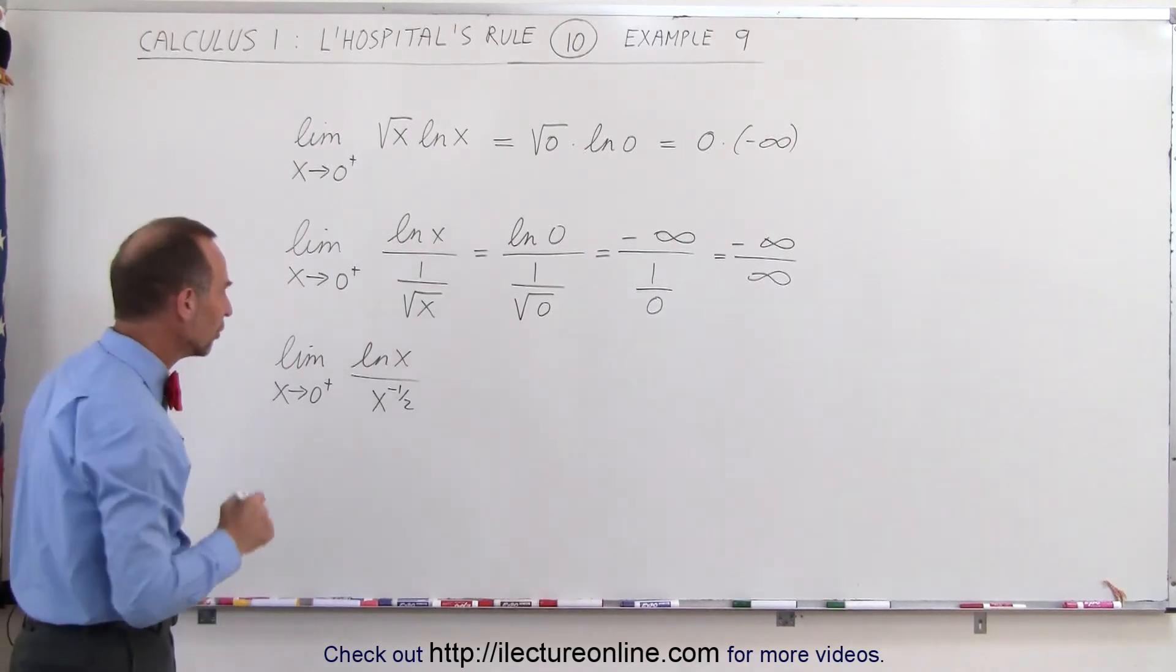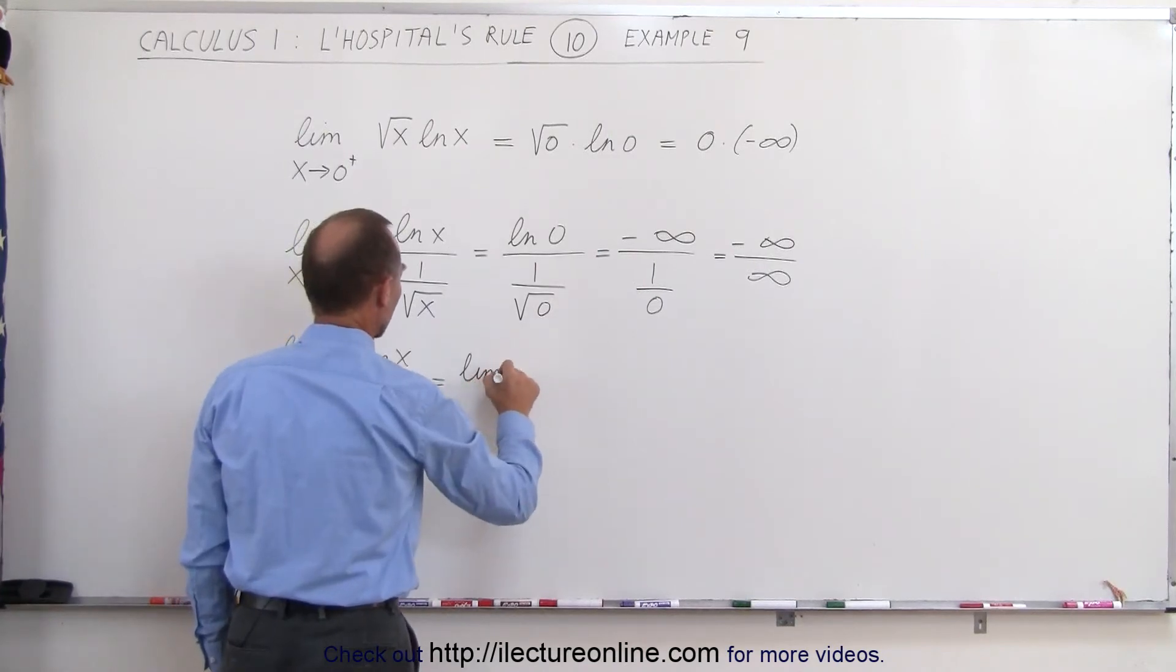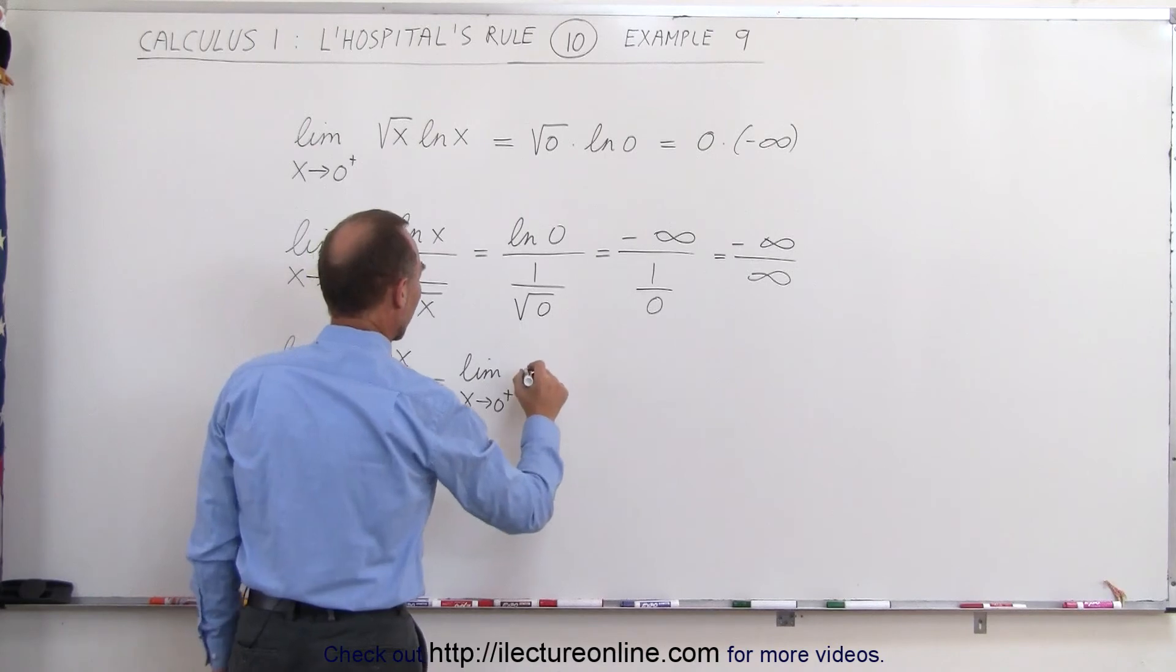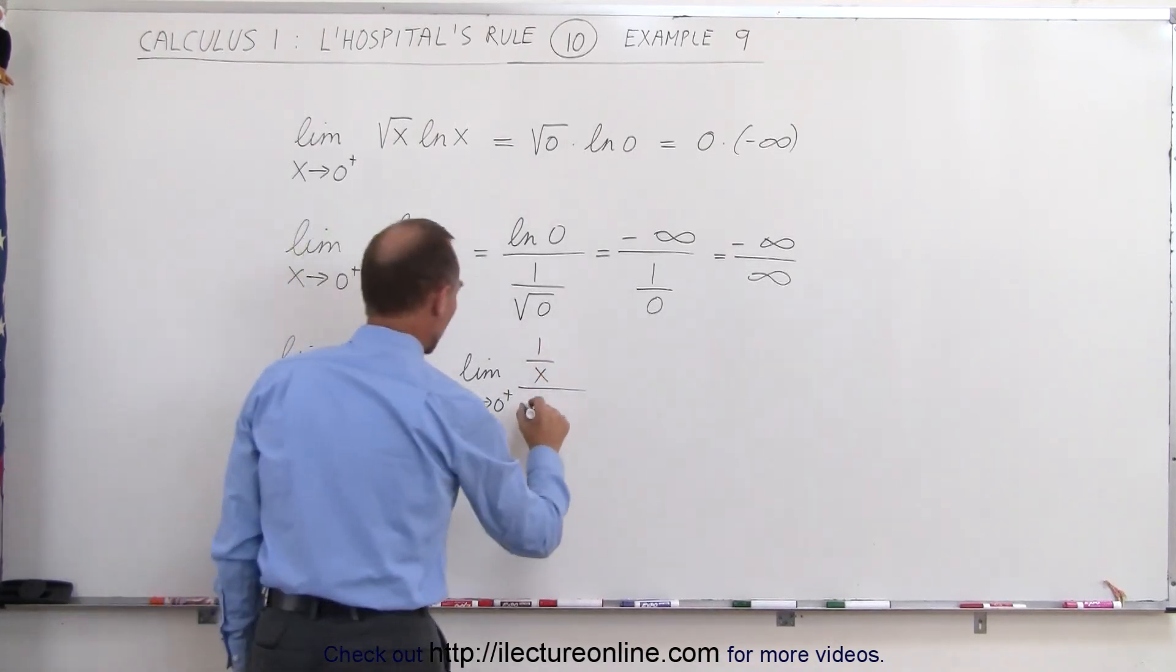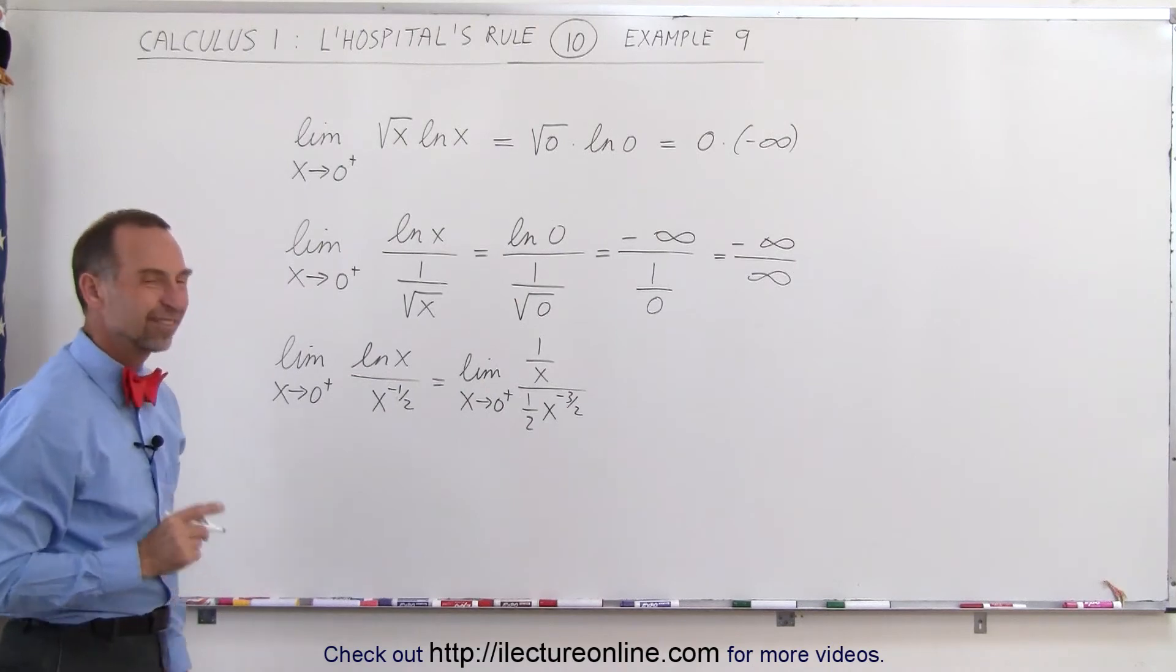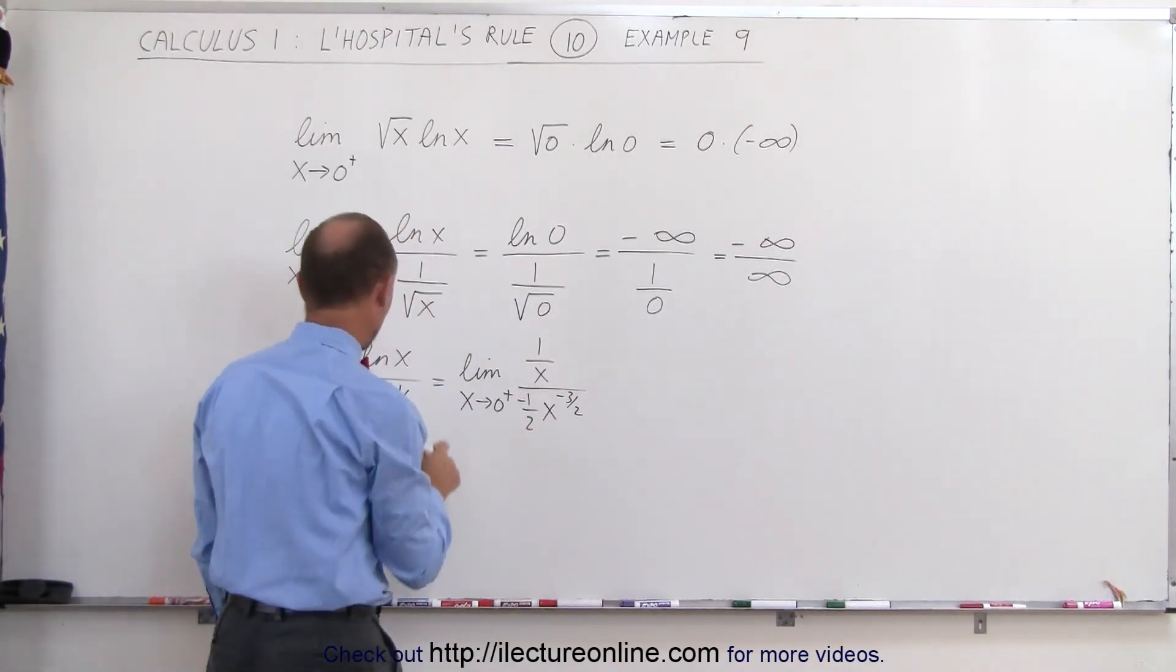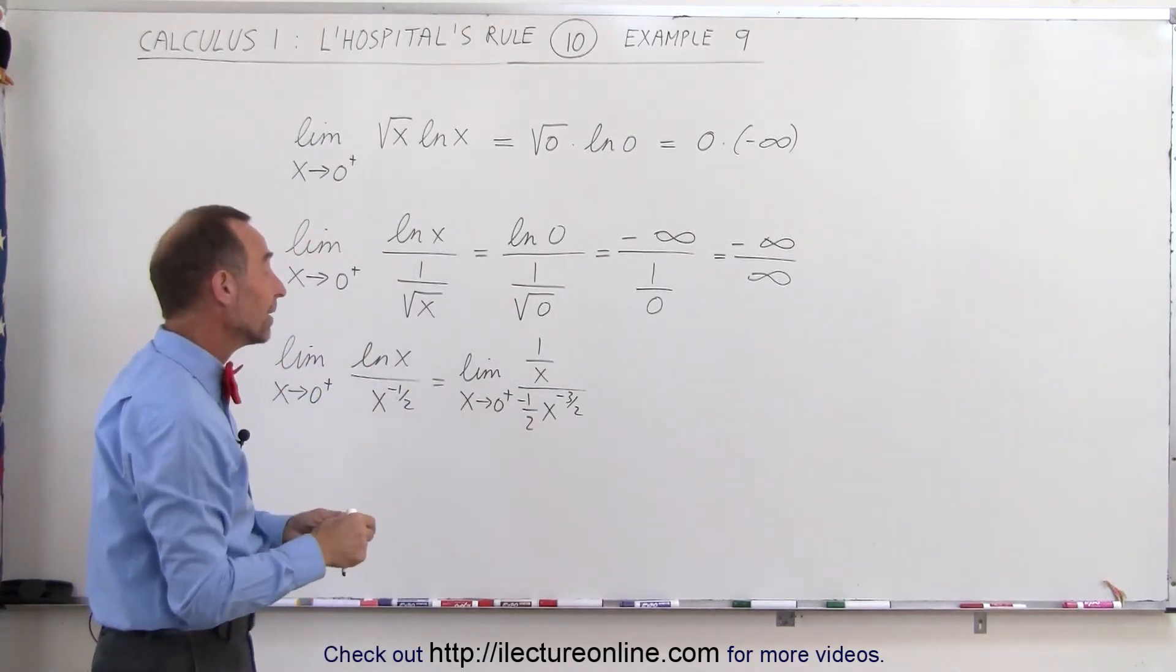Now let's take the derivative of the numerator and the denominator. This is equal to the limit as x approaches 0 from above of 1 over x divided by minus 1 half times x to the minus 3 halves power. I need a minus 1 half because I bring the exponent out here, so it's minus 1 half.